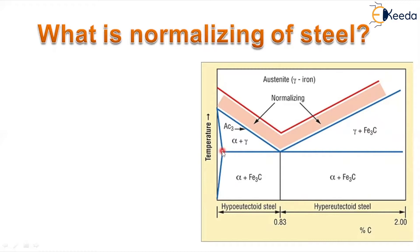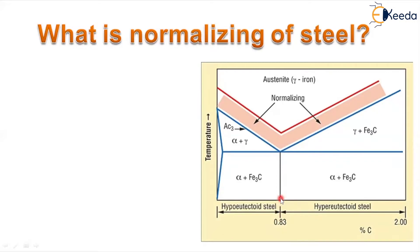In the iron-carbon phase diagram, you can observe the lower critical temperature line and the upper critical temperature line. For normalizing of hypoeutectoid steels, after the material reaches the upper critical temperature, you heat it some degrees centigrade above — for example, for 0.83% carbon eutectoid steel, the temperature is 1333°C plus 50°C.